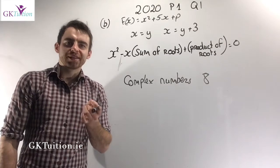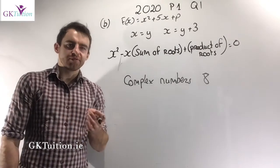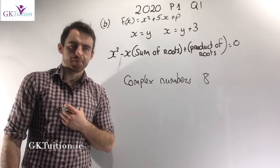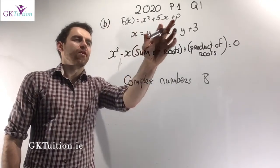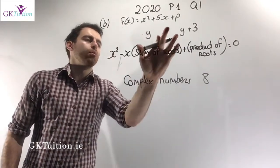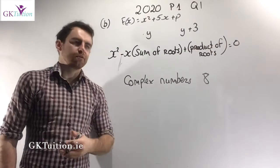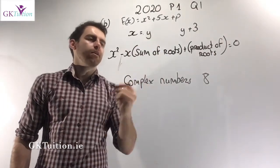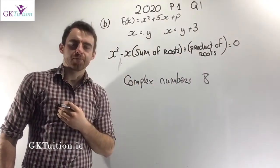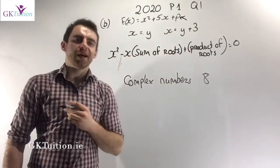In part b, we're asked to find the value of p for which the roots differ by 3. I want to show you what I consider the most straightforward way of doing it. The function is x squared plus 5x plus p, and I need two different roots. The roots I've decided to use are y and y plus 3 — one root is y, and the other is just 3 bigger. So my goal now is to find a value for y.